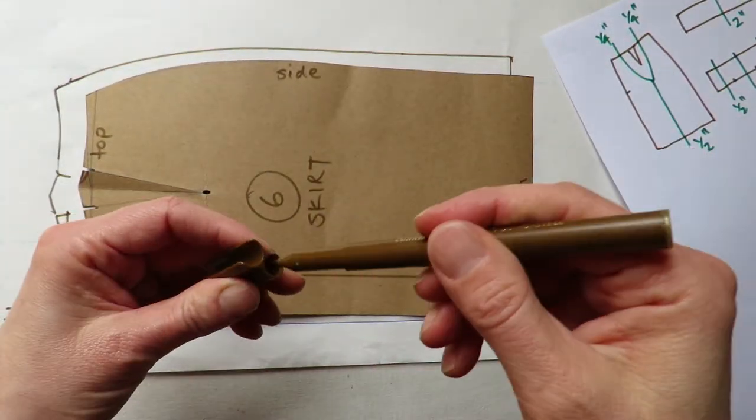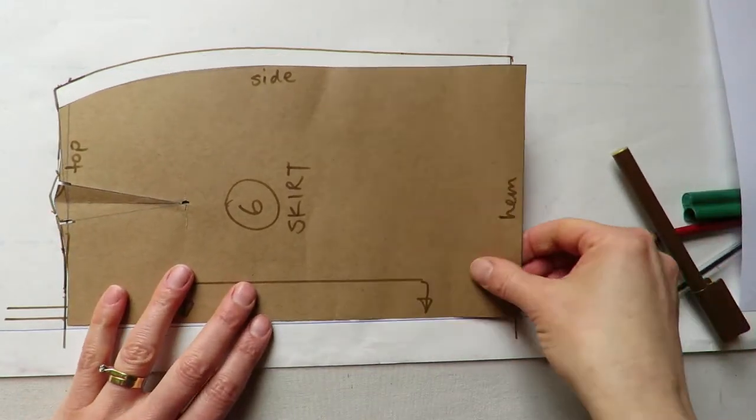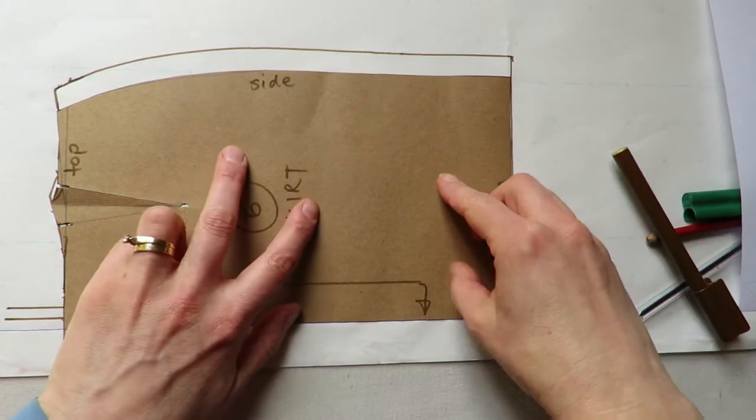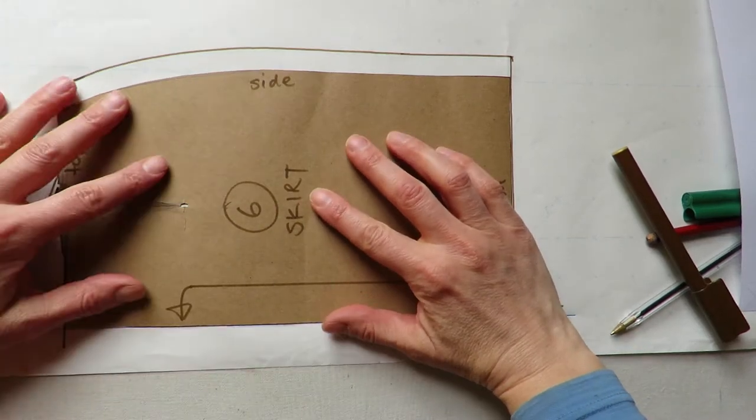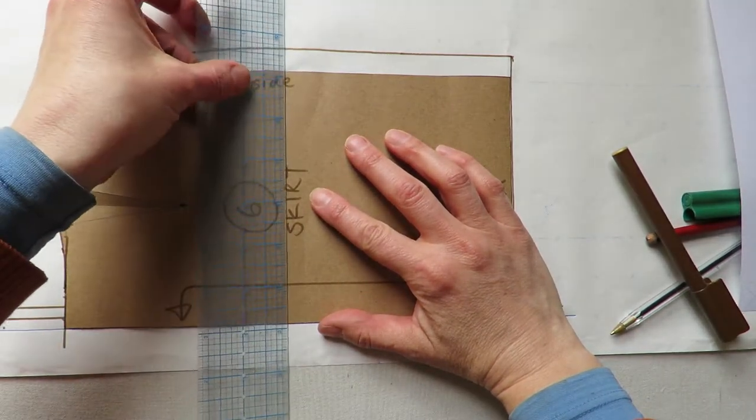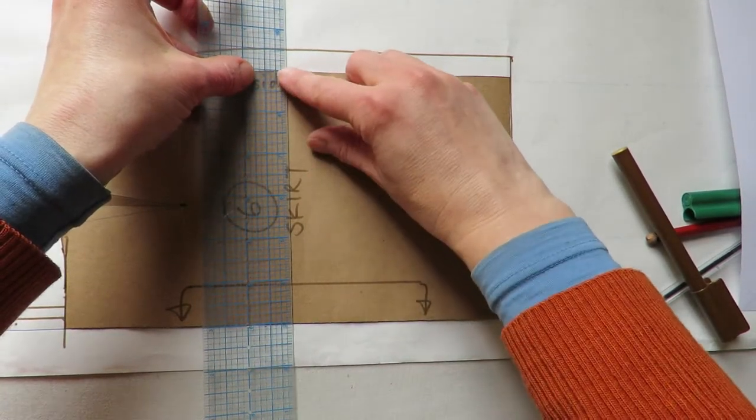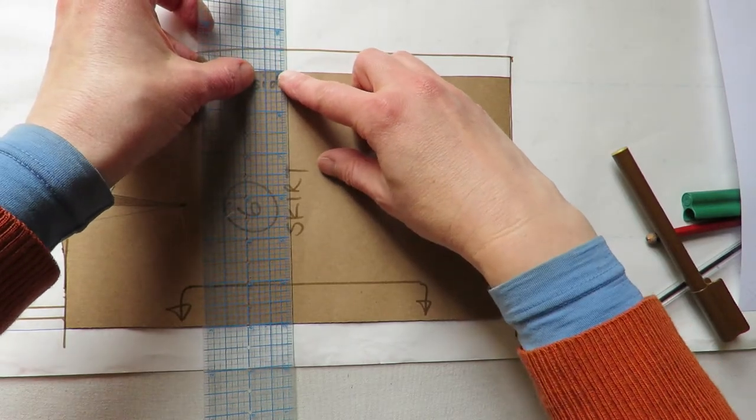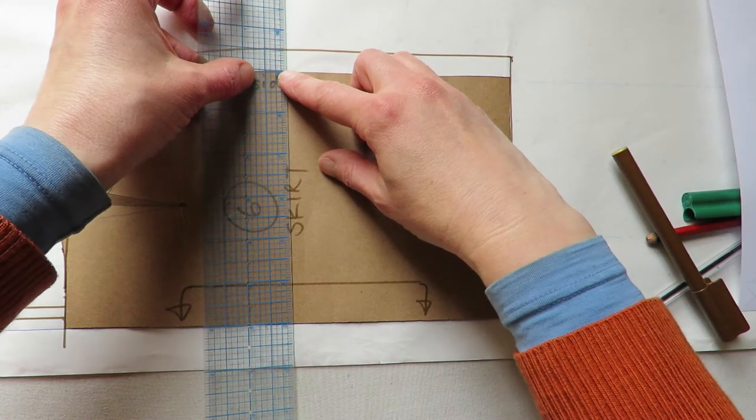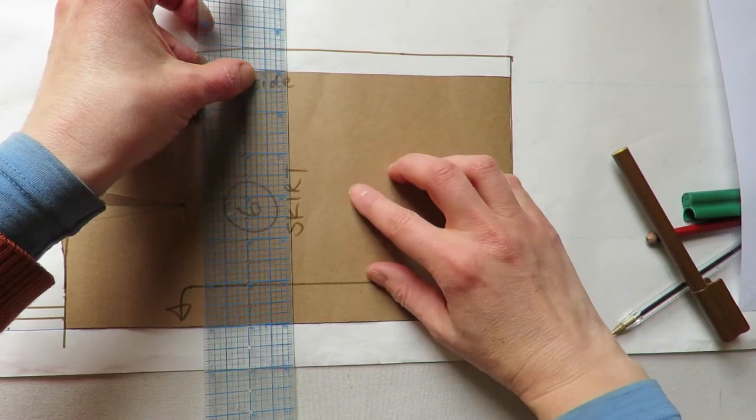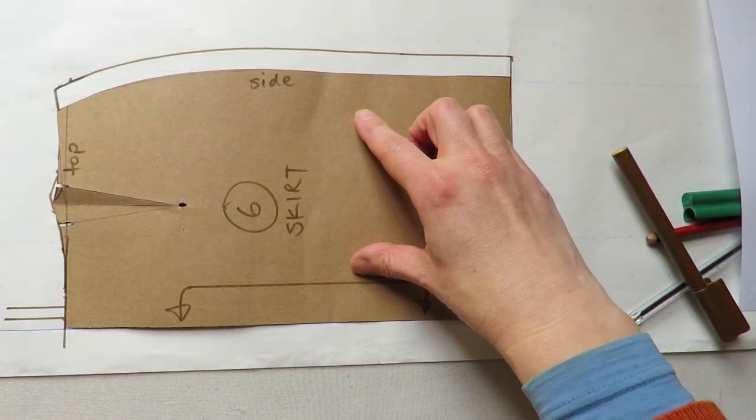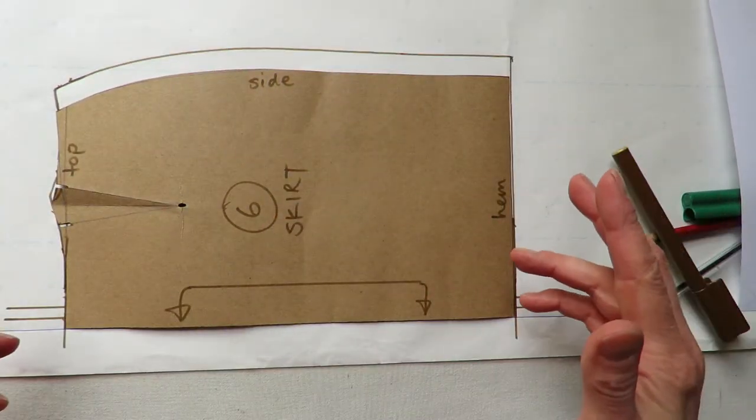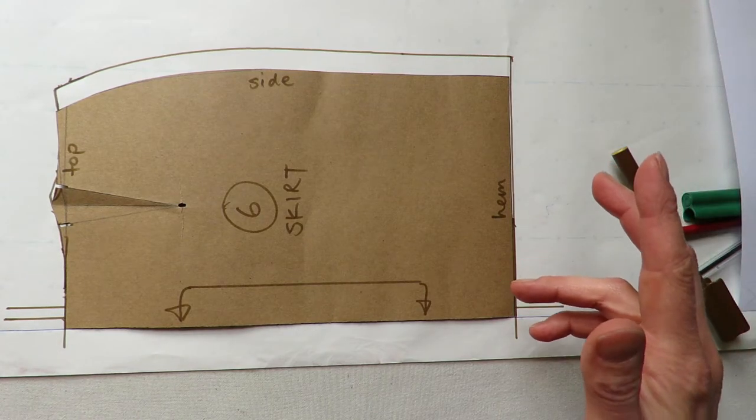And there's my pattern. And then I stick the original back on and check that I've come out. You can check with your grading ruler too, except the Texta isn't very accurate, but you can use your grading ruler to check that you've come out the right amount. And I do that with every piece. I check every piece after I've graded it.